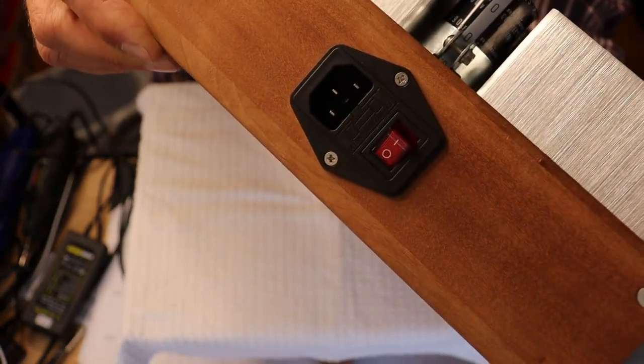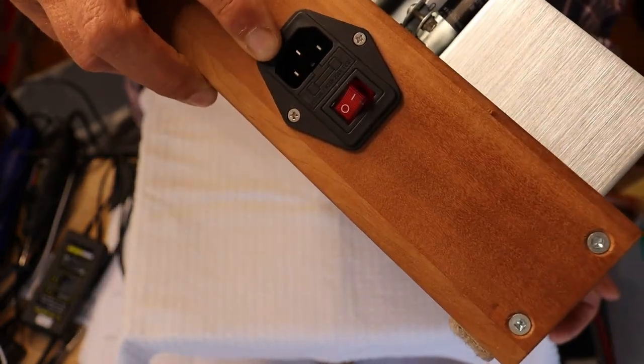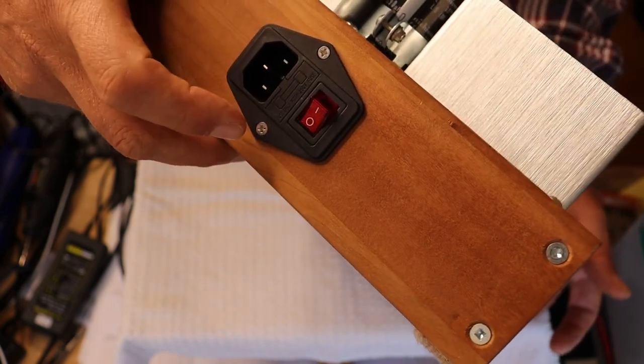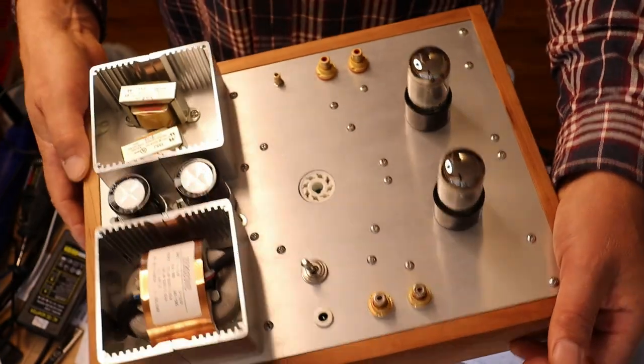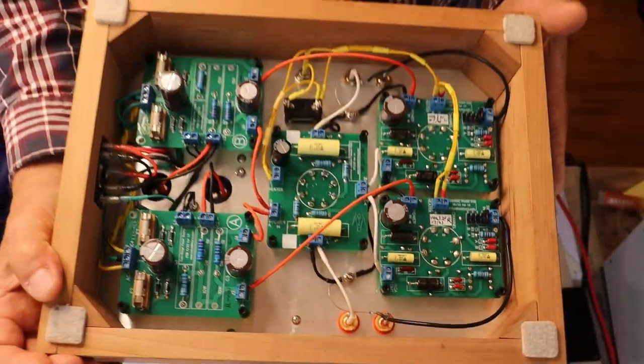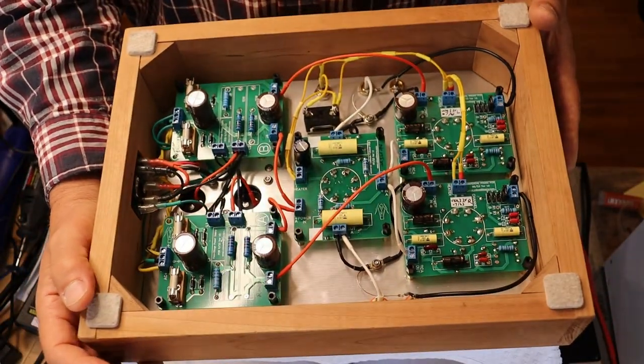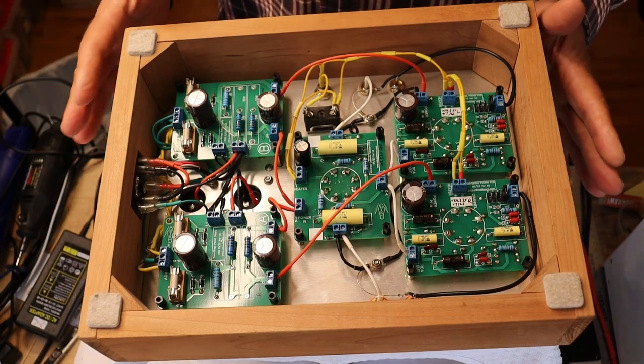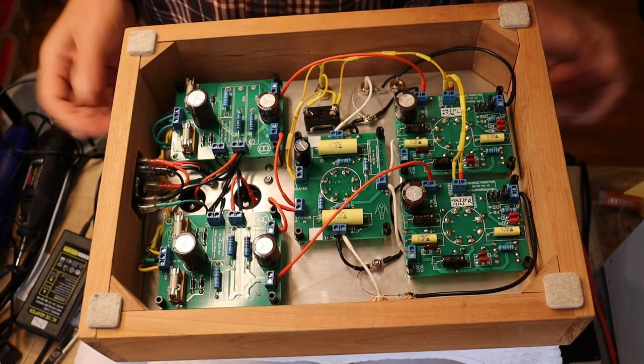On the back, you've just got an IEC inlet, a fuse in the middle and a switch. So this is your primary fuse. Okay. Let's turn this sucker over and have a look at the guts. We're going to be careful because we've got tubes on the top here. You shouldn't do it that way, but for expediency we are.